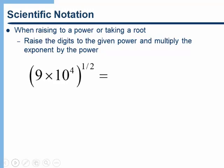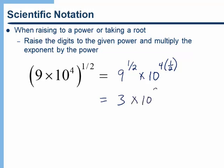When we're raising a power to an exponent or taking a root like a square root, what we do there is we take those front digits and raise them to the power and then we multiply the exponents. So in other words, this would be the same as 9 to the 1 half times 10 to the 4 times 1 half power. Okay, and so what we'd end up with for our answer is the square root of 9 which is 3 times 10 to the 2.